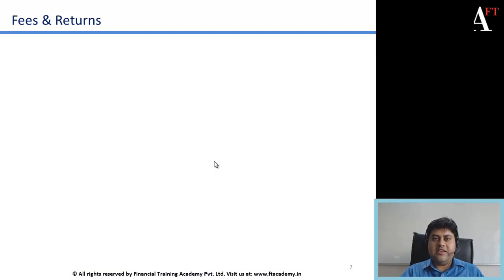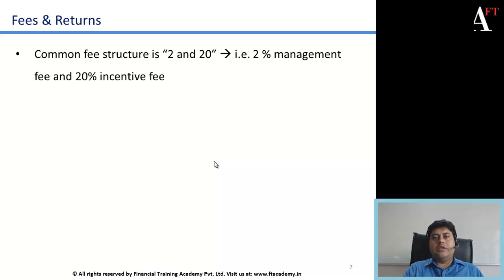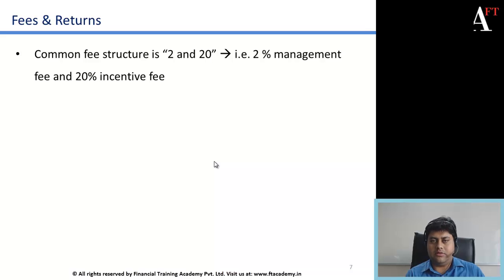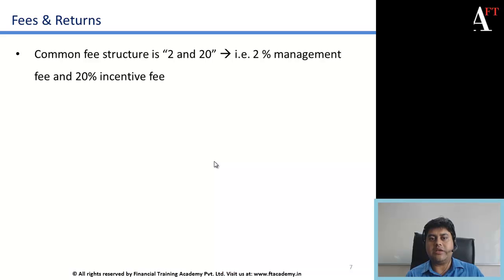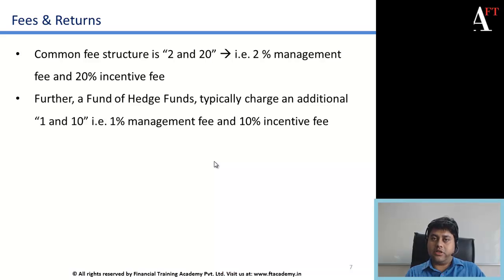Coming to the next part, that is fees and returns for a hedge fund. The most common type of fee structure for a hedge fund is '2 and 20.' This is a common industry term. What it means is: 2 refers to the 2% management fee, and 20 refers to the 20% incentive fee.